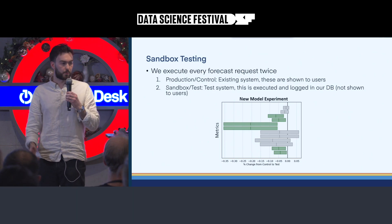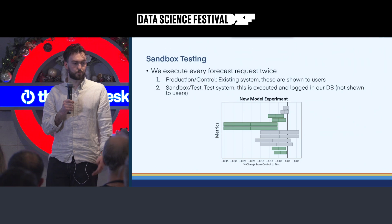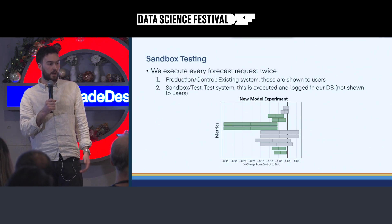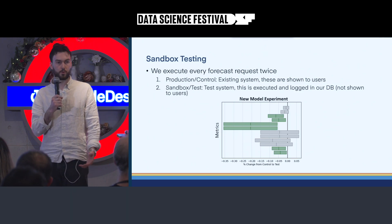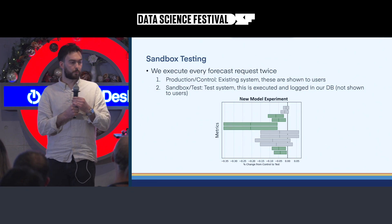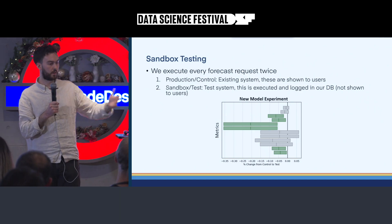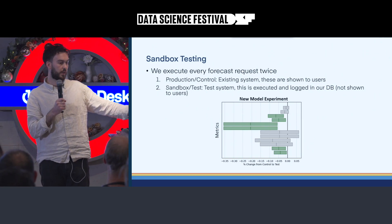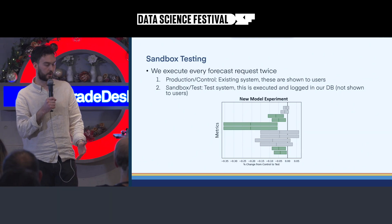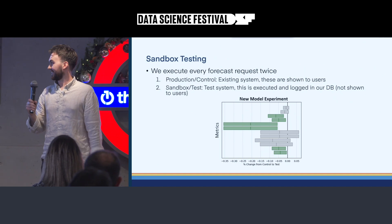Our measurement suite uses sandbox testing: every forecast request is executed twice — once against production, which is shown to users, and once against the sandbox environment with our test component, which is logged but not shown to users. We then compare both against a set of metrics. Each box in the results chart is a different metric; moving left shows a reduction in error from control to test. The width of the bars is the confidence interval. If our desired metrics are green, we move the test component into production, improving forecasts and making clients happy.